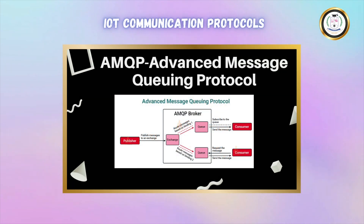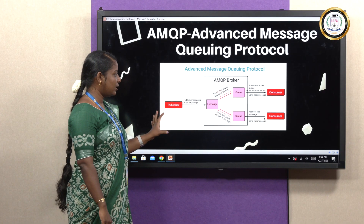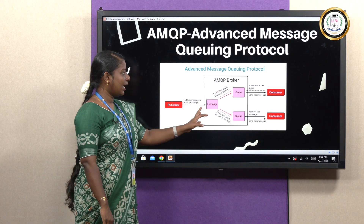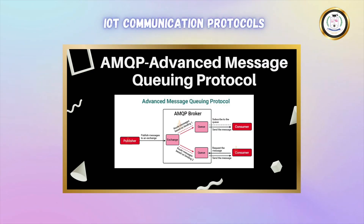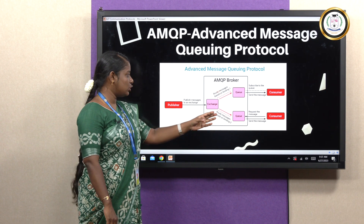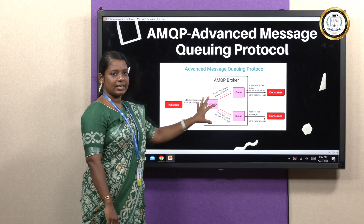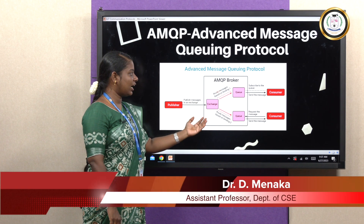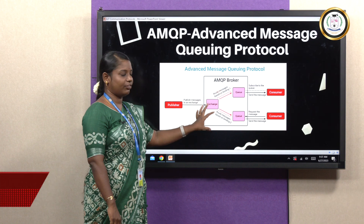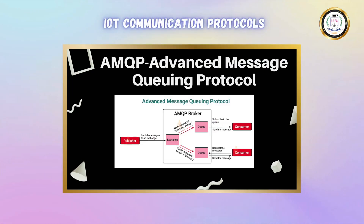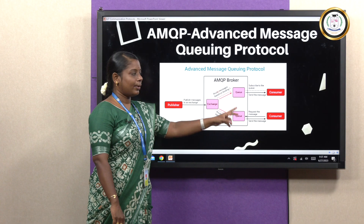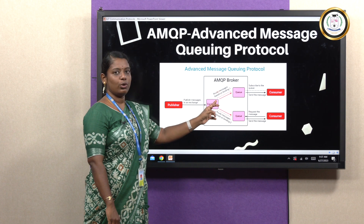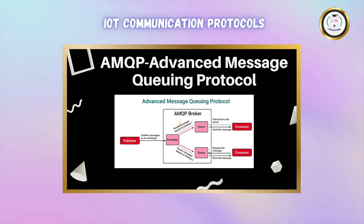Next is AMQP protocol, which is Advanced Message Queuing Protocol. In this protocol, the publisher sends to the receiver or consumer through an exchange or AMQP broker. Once the publisher needs to send information to the consumer, it passes to the exchange. In the exchange block, data messages are segregated and it checks for queue availability — whether to send the message now or later. Depending on availability, the segregated information is passed to queue 1 or queue 2. From the queue, the message is sent to the consumer, who must be subscribed to the queue to receive information. The message can also be sent in the form of a request-response model. This is AMQP protocol.